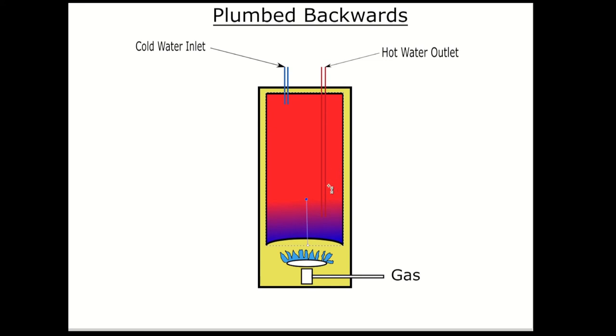So the amount of hot water you get out of a water heater that is plumbed backwards is significantly lower than when the water heater is plumbed correctly. This likely explains why this water heater's thermostat was set to such a high temperature.